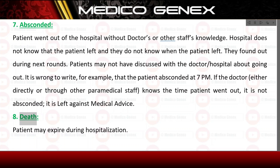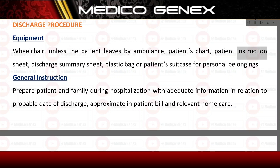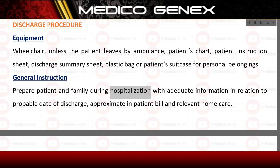Death: The patient may expire during hospitalization. Discharge Procedure Equipment: Wheelchair (unless the patient leaves by ambulance), patient's chart, patient instruction sheet, discharge summary sheet, and a plastic bag or patient's suitcase for personal belongings. General Instruction: Prepare the patient and family during hospitalization with adequate information regarding the probable date of discharge, approximate inpatient bill, and relevant home care.